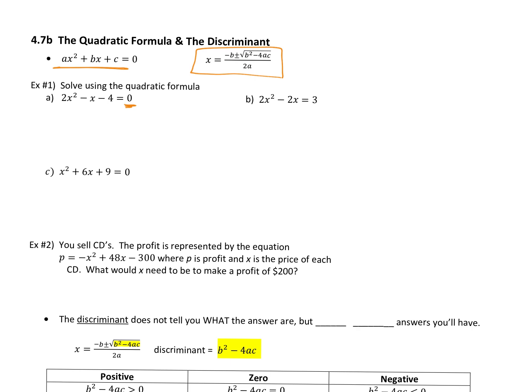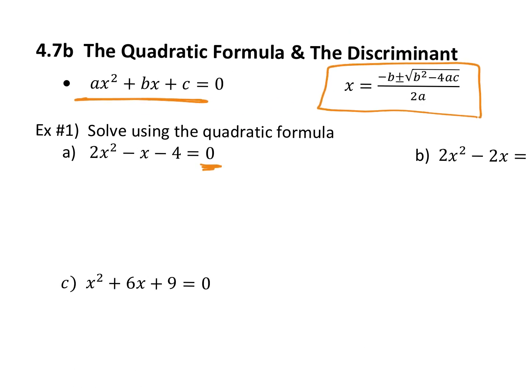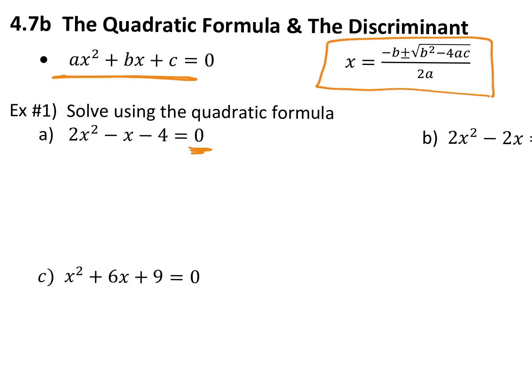It's the easiest one and the hardest one all at the same time, just because of the nature of it. You have an A term of two, a B term of negative one, and a C term of negative four, and we are plugging that into this formula. So negative B right now is a positive one. This is one plus or minus — meaning we have two answers — one plus something and one minus that same something, then divide.